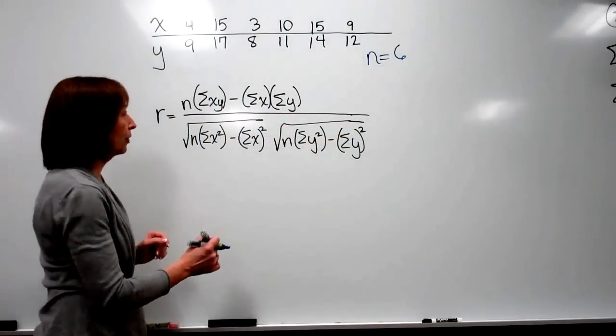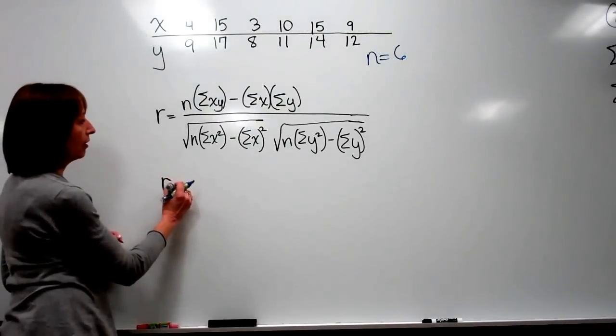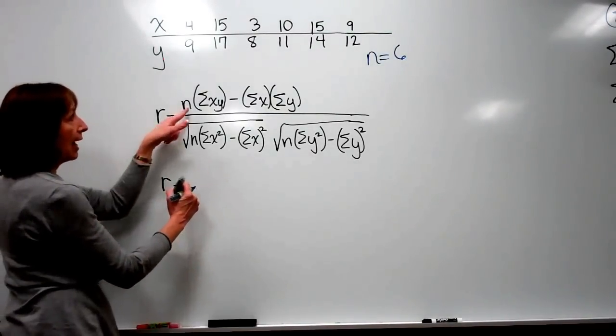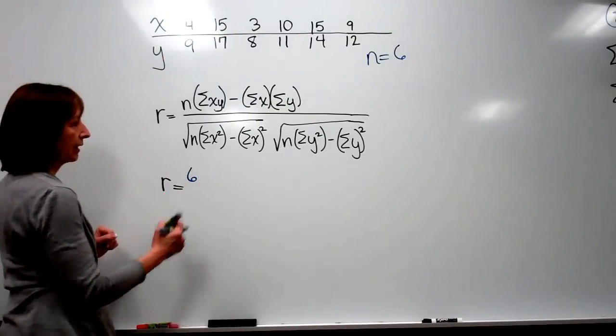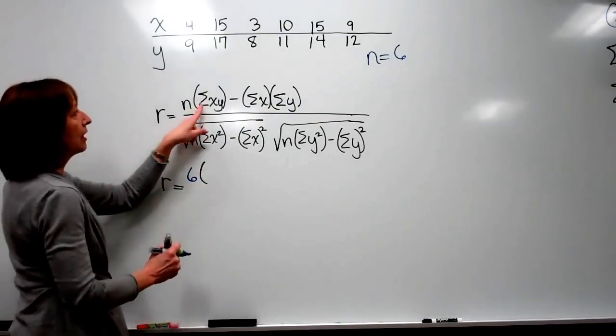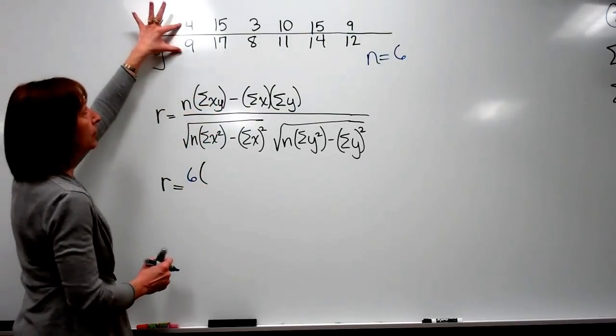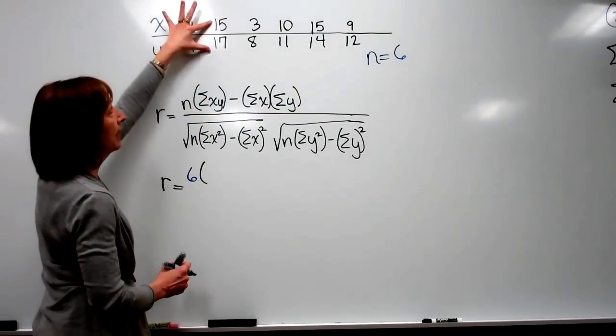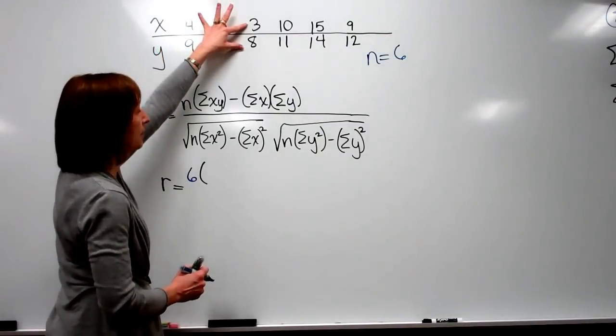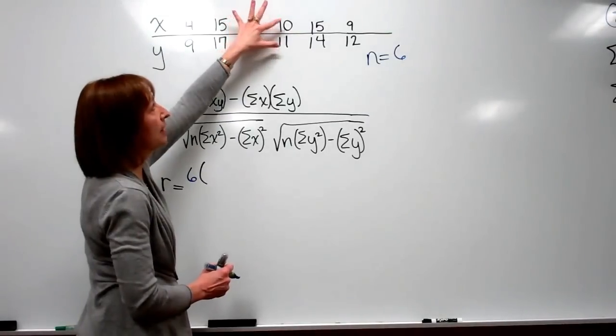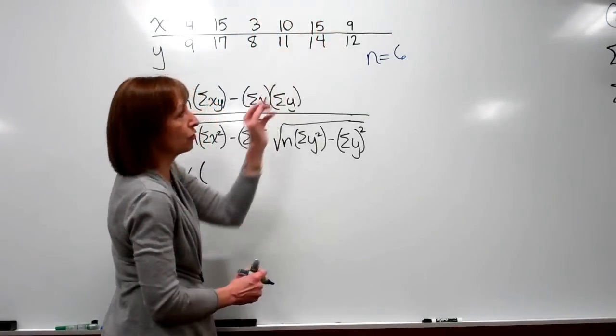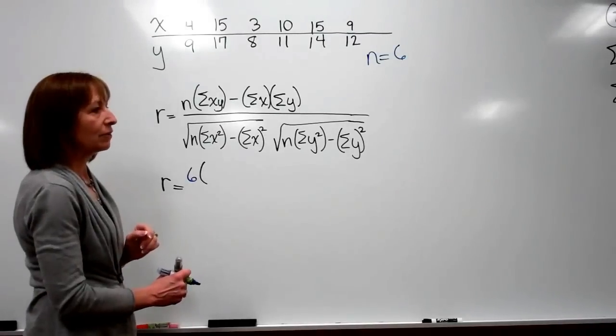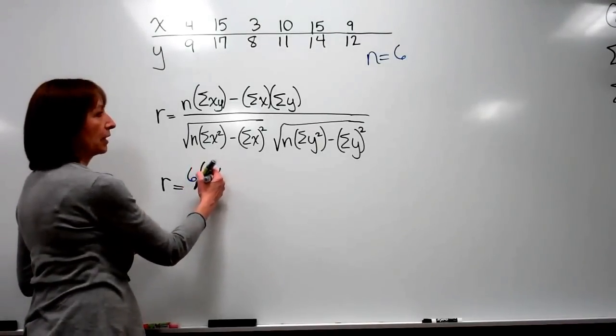Now these I've worked all out, and we have that r is equal to, n again is the number of ordered pairs, which is 6, times the total of the x times y's. So if I take 4 times 9 plus 15 times 17 plus 3 times 8 plus 10 times 11 plus 15 times 14 plus 9 times 12, that gives me a value of 743.